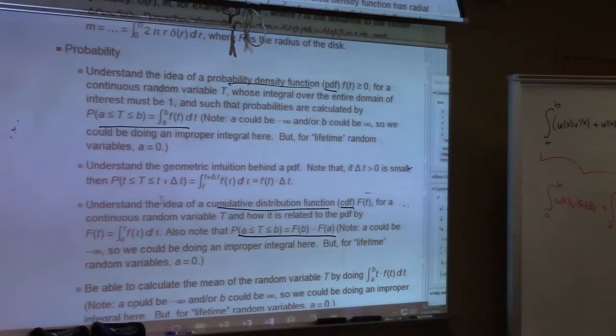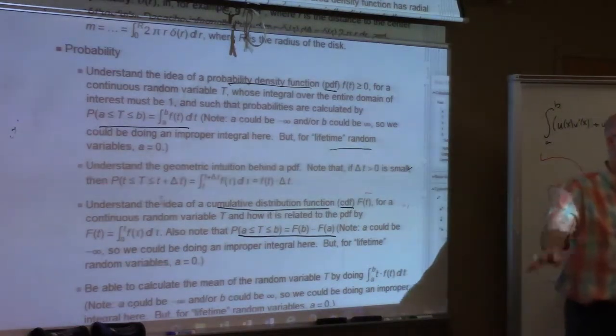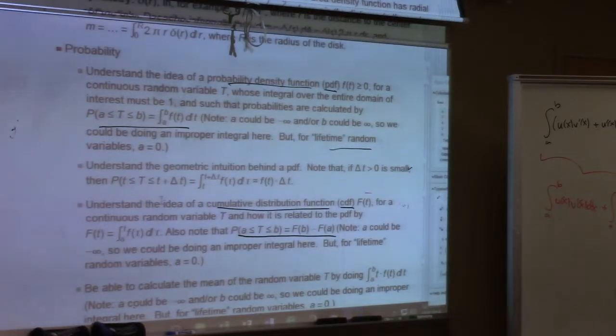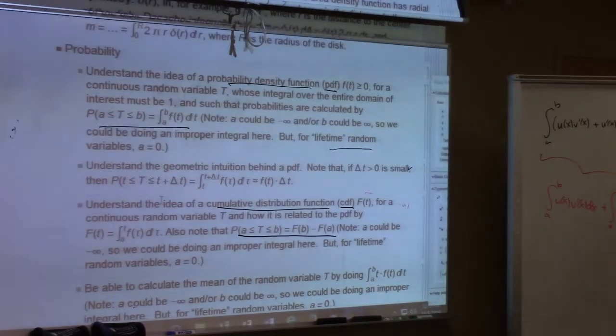So realize that A could be minus infinity, B could be infinity. Know for lifetime random variables, the A is zero. We don't consider negative times for those. That's why it's called a lifetime random variable. It's the life of something.